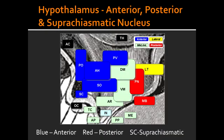What is the function of the anterior hypothalamus? The function of the anterior hypothalamus is to cool the body and also produce parasympathetic effects. The mnemonic to help you remember this is that the anterior nucleus leads to cooling of the body — anterior cooling, which stands for AC.